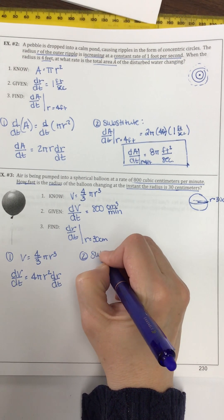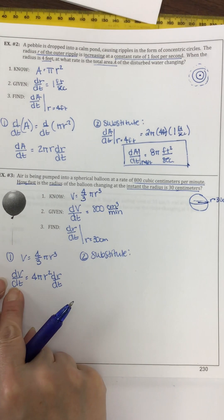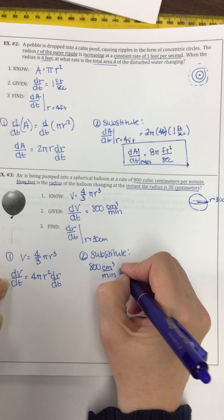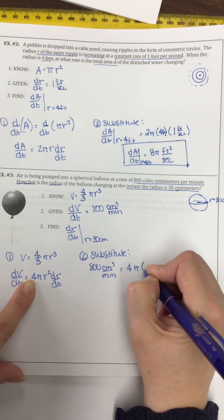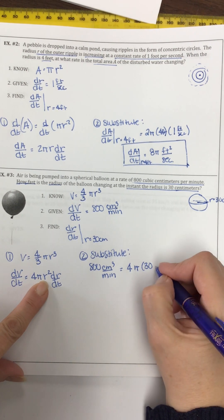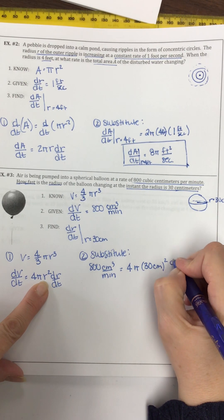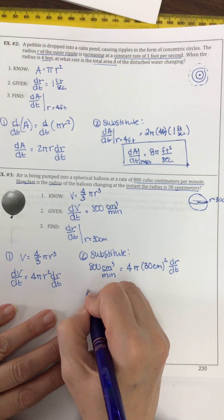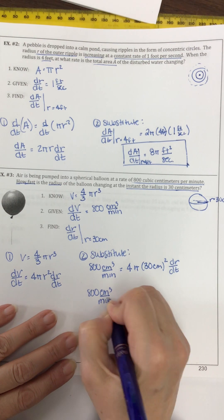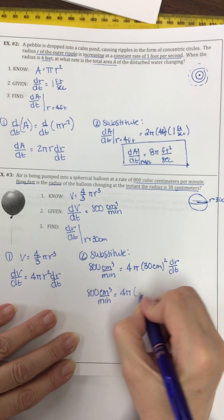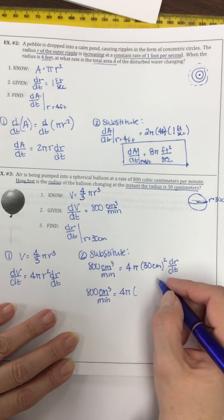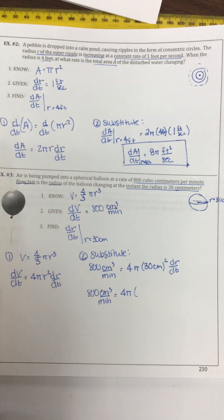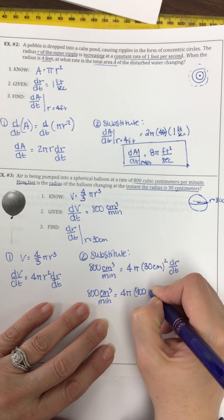The second thing I need to do is substitute. I have dV/dt — it is 800 centimeters cubed per minute equals 4 pi. My radius is 30 centimeters, and I need to square that, and I'm looking for dr/dt. So 800 centimeters cubed per minute equals 4 pi times 30 squared. 30 squared is 900, so that's 3,600 pi centimeters squared times dr/dt.